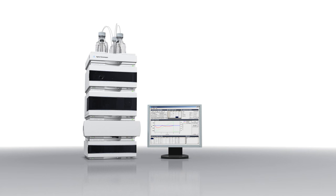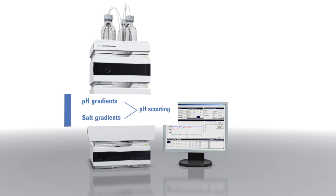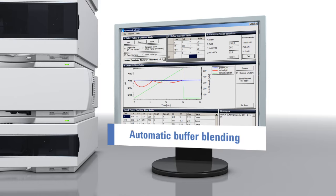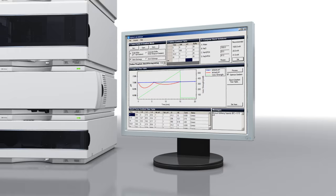During method development in ion exchange chromatography, buffer systems are used to create pH or salt gradients for pH scouting. In combination with the Agilent 1260 Infinity Bioinert LC system, Agilent Buffer Advisor software helps you automate the blending of these buffer systems, eliminating the tedious and error-prone steps associated with manual buffer mixing.